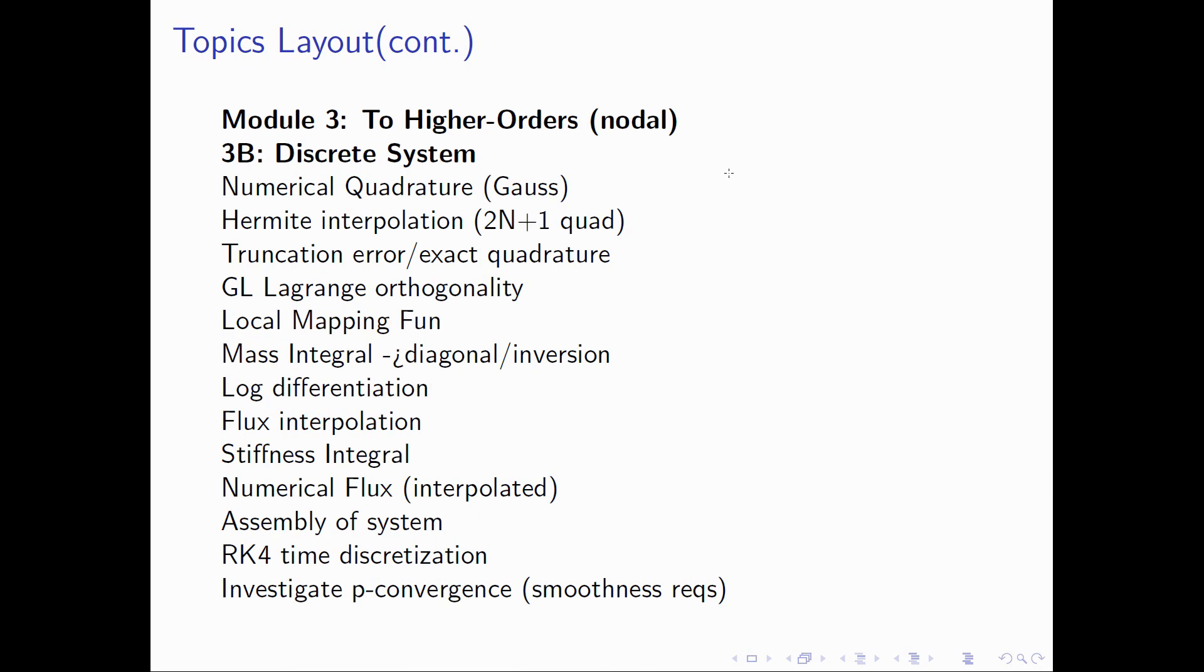Finally, in the second part of module three, we will cover the rest of the discrete system. We will use our methodology developed for the higher order solution approximation to examine what's necessary in terms of both quadrature as well as mapping, followed by developing the mass and stiffness matrices and some of the potential pitfalls there as well. Finally, we'll assemble the system into a semi-discrete system and then apply a more advanced RK4 time discretization. We will then also investigate the order conversions, which we previously could not in the low order solver.